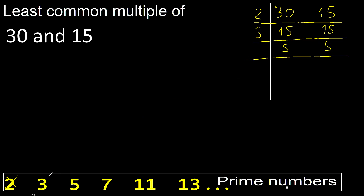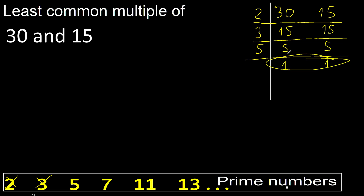Cannot be divided by 3. Divided by 5: divided by 5 is 1, divided by 5 is 1. Ok.